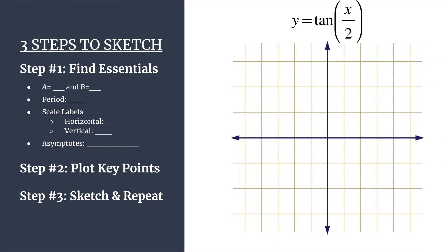Okay, we have our process on the left, we have our equation and our grid on the right, and before we start it might be helpful to rewrite this as tangent of one-half times x, just so we can see that b value really clearly.